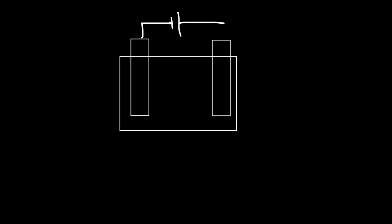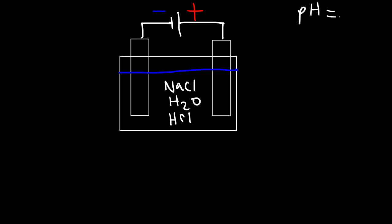In this video we're going to talk about the electrolysis of an aqueous solution of sodium chloride. We're going to have two graphite electrodes — you can also use platinum or other inert electrodes. This is going to be the positive terminal of the battery and this is the negative terminal. In the solution we're going to have water and sodium chloride, and let's say we also have HCl so the solution is acidic — pH is zero, a one molar solution of HCl.